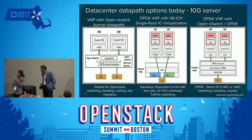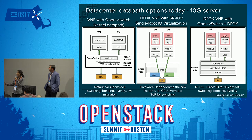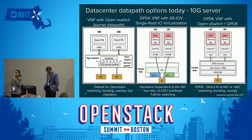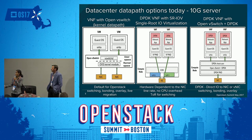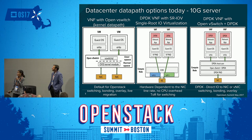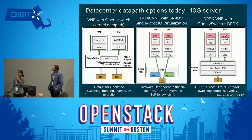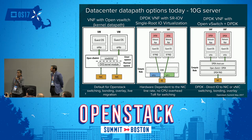Here are the data path options we have today for 10-gig servers, talking with OpenStack. Our default configuration is Open vSwitch with the kernel data path. This gives you a ton of features — switching, bonding, overlay — but your performance does not meet what you want. If you want higher performance, you've got to move to the right. What we have today in deployment for NFV is a lot of SRIOV. This is hardware dependent on your NIC vendor, but you can get line rate 10-gig. However, if you want any switching options, you're dependent on your top-of-rack switch — there are no switching options. Moving further right, which is new GA for Red Hat OpenStack, is Open vSwitch DPDK, with the data plane toolkit.